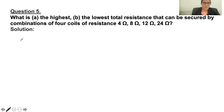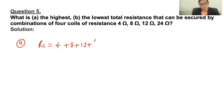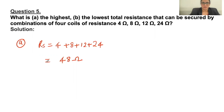We know that in a series circuit the total resistance is the sum of the individual resistances. So solution to part A is when all four resistors are connected in series, that will be the highest resistance. RS = 4 + 8 + 12 + 24, which gives 48 ohm. So the equivalent resistance of the series circuit is 48 ohm.